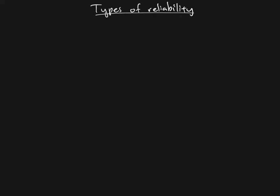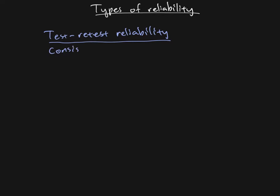The first type is called test-retest reliability. The name tells you exactly what it is. If we have reliability, it means we're getting consistent results — consistent results in the sense of giving a test or some kind of measurement, then coming back a little while later, giving the test again, and getting the same results when we retest with the same measurement.